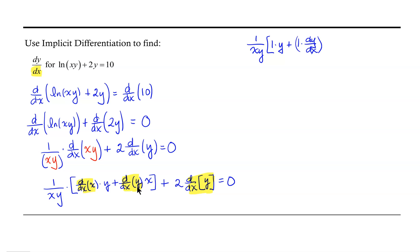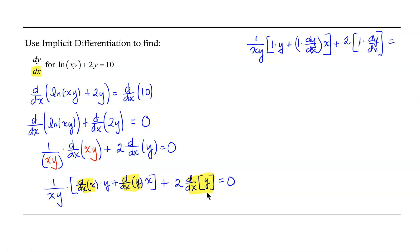We have that extra factor of x from the product rule. In the second term, we get a 1 for the derivative of y and then a dy/dx due to the chain rule. So with the 2 from the constant multiple rule, the derivative with respect to x of y gives us 1 times dy/dx, equals 0.